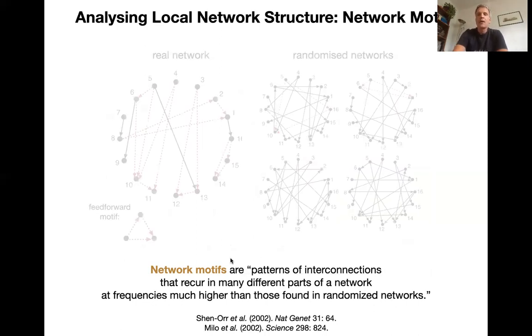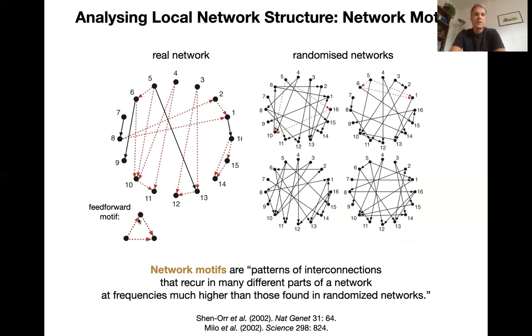What does that mean? So not only do you go and count, for example, these feed forward motives in your network here, they're indicated by these red dashed lines. But then you generate a set of randomized networks which have the same in degree, out degree, same set number of nodes and connections as your network, but they're randomly rewired. And then you count how many of those motives you have in those sets of different networks.